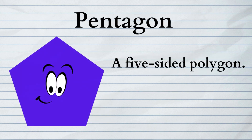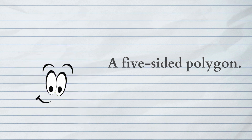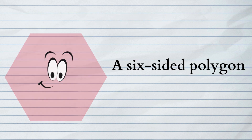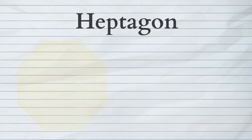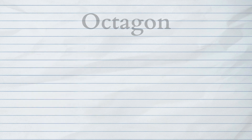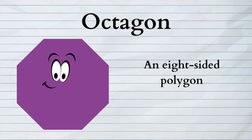Pentagon: a five-sided polygon. Hexagon: a six-sided polygon. Heptagon: a polygon with seven sides. Octagon: an eight-sided polygon.